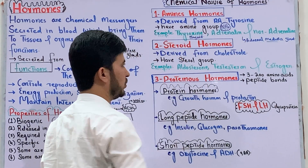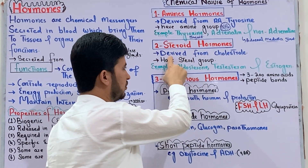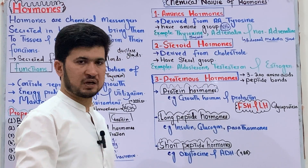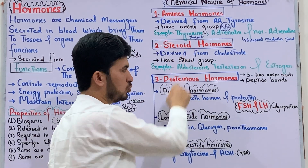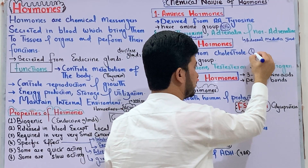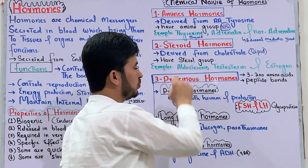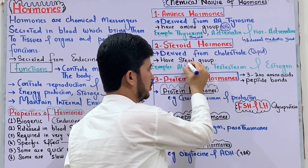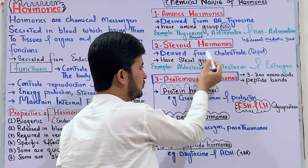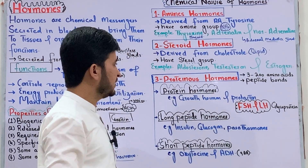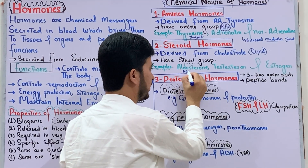These hormones are amino hormones. The second type is steroid hormones. Steroid hormones are derived from cholesterol. Cholesterol is a lipid, and the steroid group and cholesterol group are present in these hormones. Examples include aldosterone, secreted from the adrenal cortex; testosterone, secreted in males from the testes; and estrogen, secreted in females from the ovaries. These are steroid hormones.